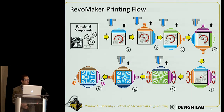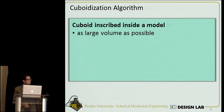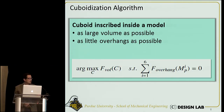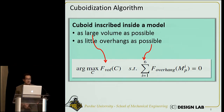Now the question is how we generate the cuboid. The cubitization algorithm has two objectives: first, generate a cuboid inscribed inside the model with as large a volume as possible; second, the six partitioned geometries should have as little overhanging as possible. Considering time consumption and post-processing effort, we place the overhanging constraint as a hard constraint and put larger volume as the objective function. Directly solving this using non-linear optimization is difficult because these two functions are hard to evaluate.